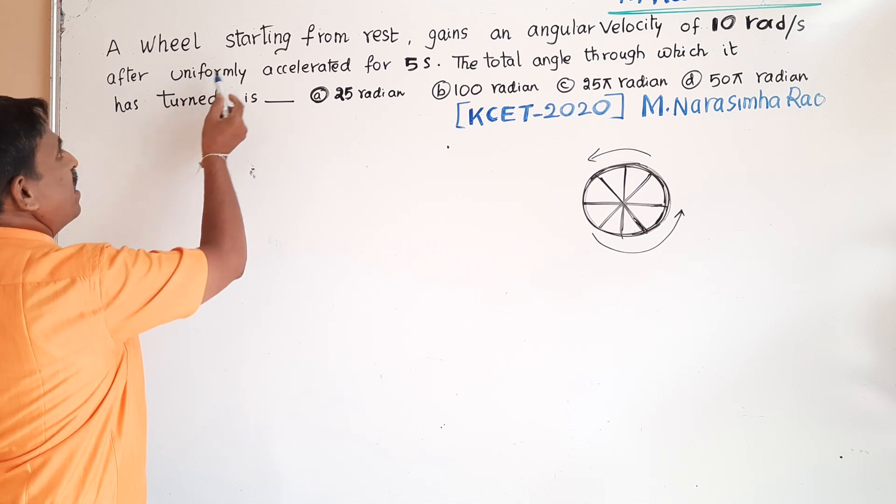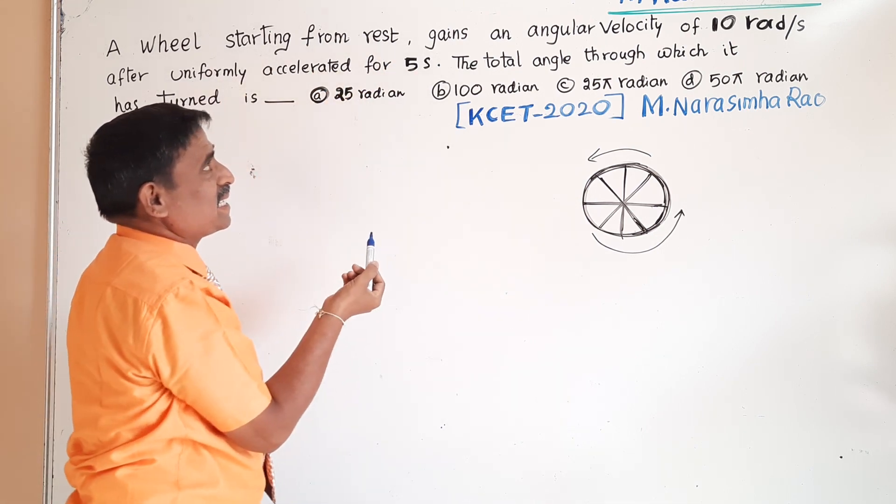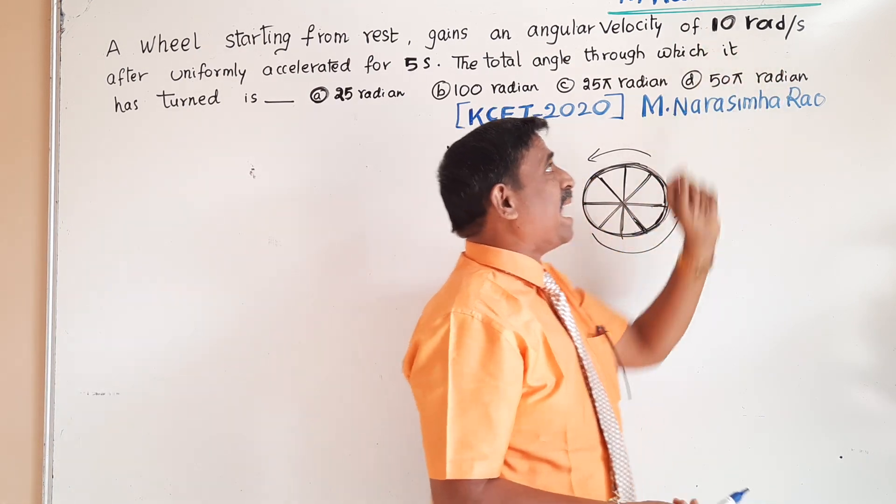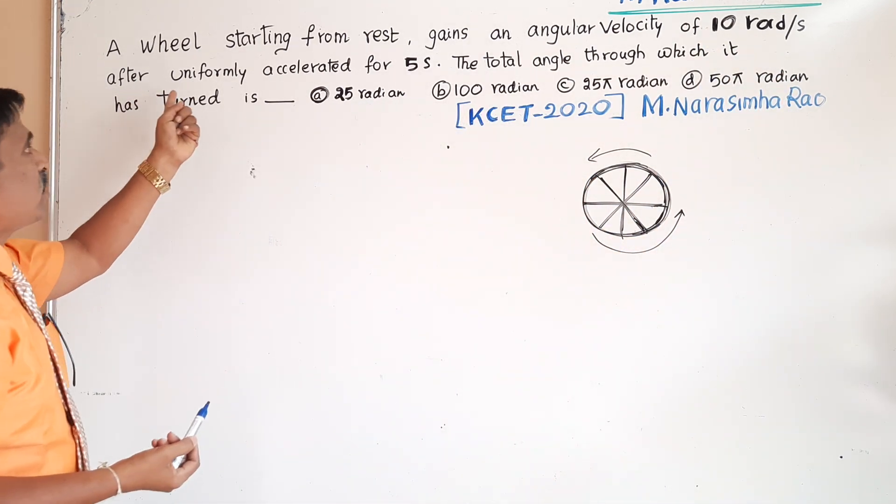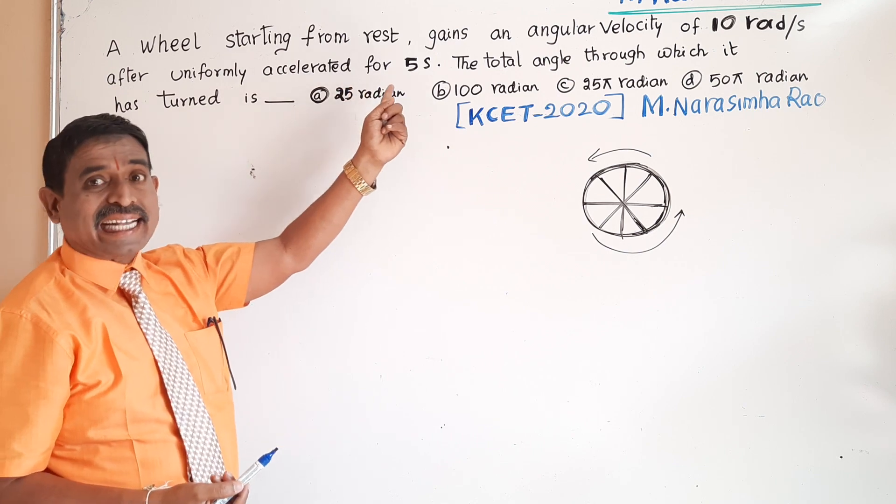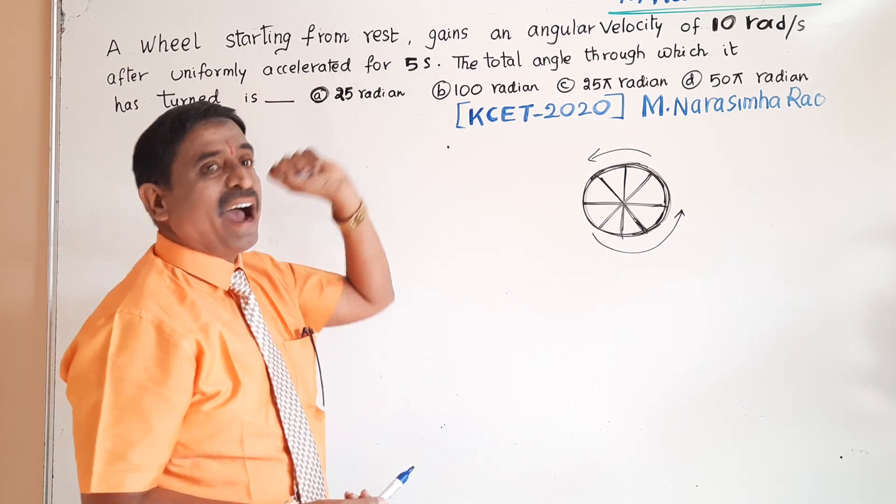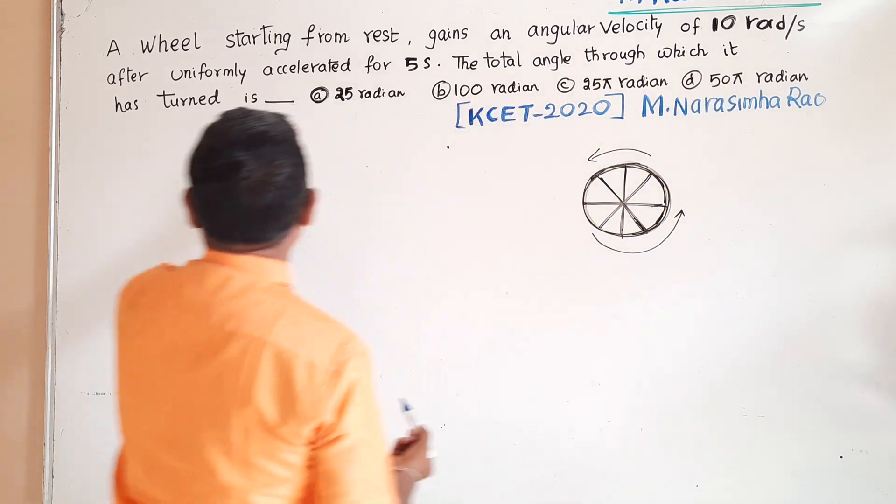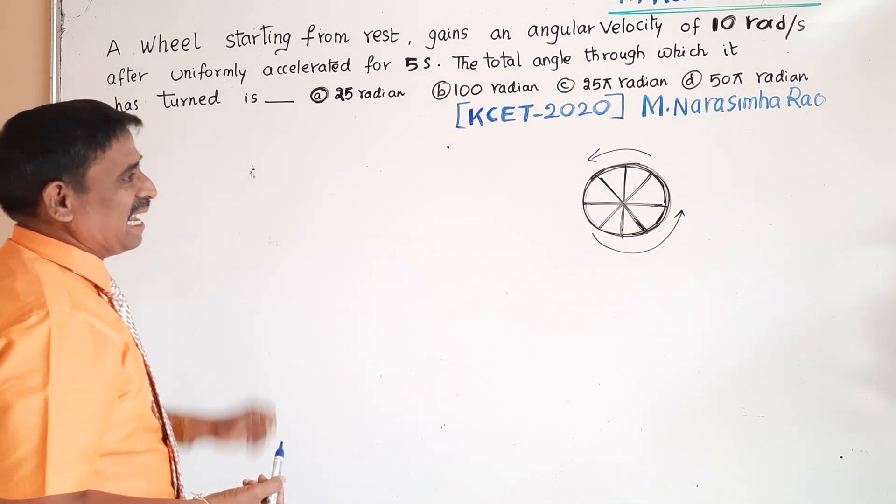A wheel starting from rest gains an angular velocity of 10 radian per second after uniformly accelerated for 5 seconds. The total angle through which it has turned is: